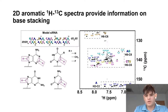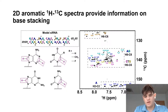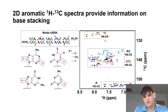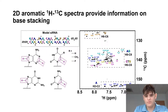Shown here is a 2D aromatic proton-carbon spectrum, which provides information on base stacking. The proton-carbon correlations report on both base-paired and non-base-paired regions and are unaffected by solvent exchange, unlike the amino proton-nitrogen correlations. For our model siRNA, we have three distinct regions defined by the carbon chemical shift: at the top of the spectrum, all the 5-fluorouracils; in the middle, the adenine, guanine, cytidine, uridine, and thymidine aromatic proton-carbon correlations; and at the bottom, all of the adenine H2-C2 correlations.